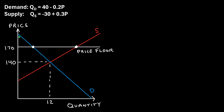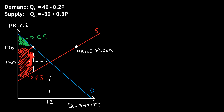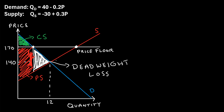When this occurs, our new consumer surplus is this little triangle — still the area above the selling price but below the demand curve, but notice how much smaller it has gotten. The producer surplus is now this area in red — still the area below the selling price but above the supply curve. But notice there is a new section of this graph: this triangle right here. The area of this triangle is referred to as deadweight loss, and it represents the sum of all of the transactions that would have occurred in a free market, but no longer occur because the price floor is set so high.